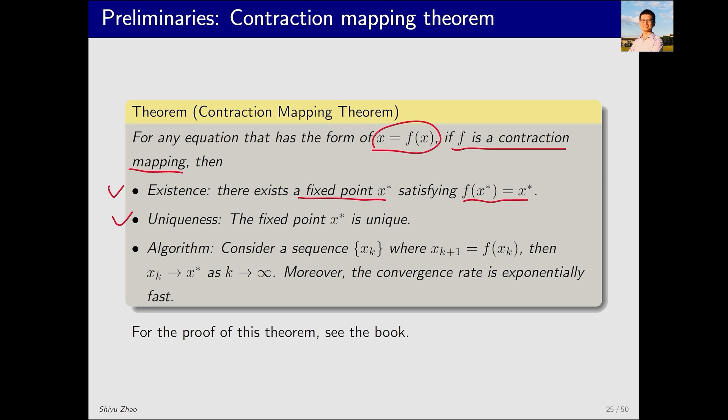Second, uniqueness. This fixed point is unique. Third, the theorem offers an iterative algorithm for finding the fixed point x_{k+1} equals f(x_k). If I start from x0, I can compute x1 using this algorithm. By substituting x1 back, I can compute x2 and so on. x_k will ultimately converge to its fixed point x star as k goes to infinity.